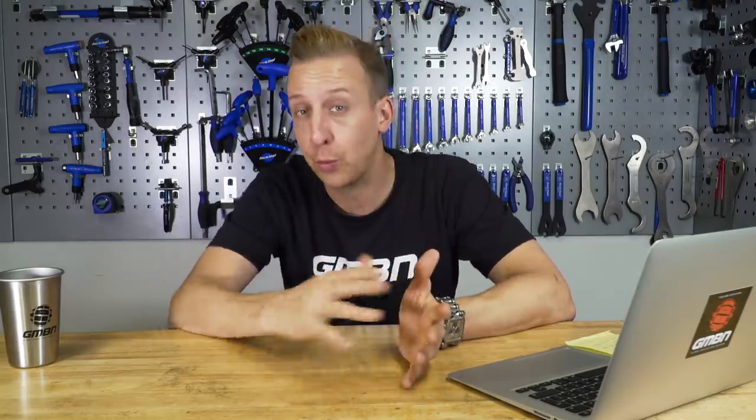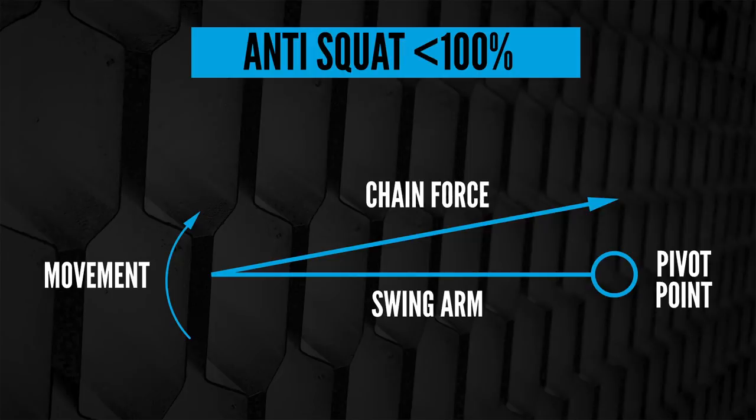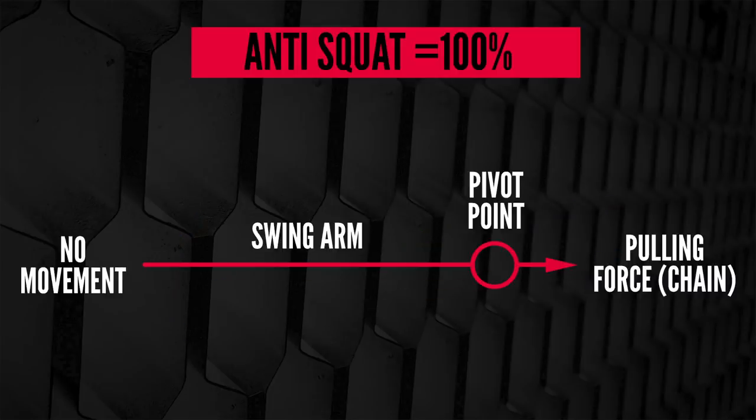Anti-squat is essentially a way around pedal bob, and it's pretty much a determining factor between bike designs of how some bikes pedal better than others. When you pedal a suspension bike it can have pedal squat; anti-squat is simply the value to counteract that. A bike with 100% anti-squat value effectively means you're cancelling out any squat, so you won't get any bob whatsoever when you pedal. Bikes with multiple chainrings will have different levels of anti-squat depending on chainring position and pivot point location. Generally smaller chainrings have a higher anti-squat value, which is beneficial since you're in a high-torque situation climbing something steep.